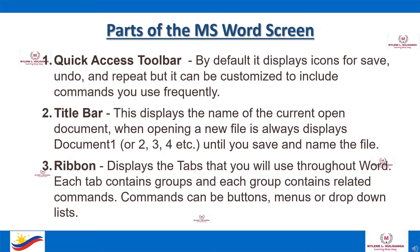Parts of the MS Word screen. The Quick Access Toolbar displays icons for Save, Undo, and Repeat, but it can be customized to include commands you use frequently. The Title Bar displays the name of the current open document; when opening a new file it always displays Document 1, 2, or 3 until you save and name the file. The Ribbon displays the tabs you will use throughout Word; each tab contains groups and each group contains related commands, which can be buttons or menus.